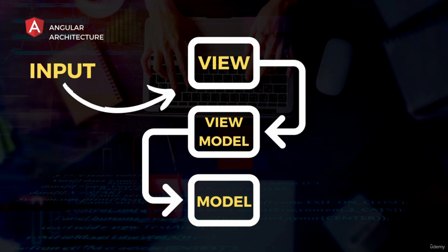A view is a section of a web page responsible for rendering a specific part of the application's user interface. Views are defined using Angular templates, which are HTML files that include Angular-specific syntax and directives. Basically, what we see in a web page is the view — like the home button in Facebook, the message button in Instagram, or the images we see in social media.